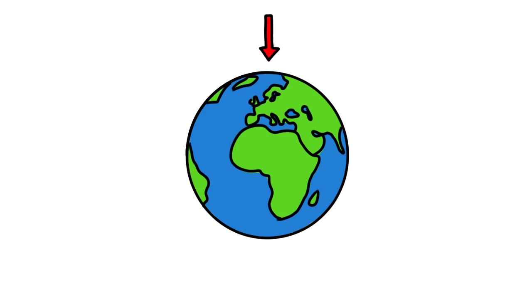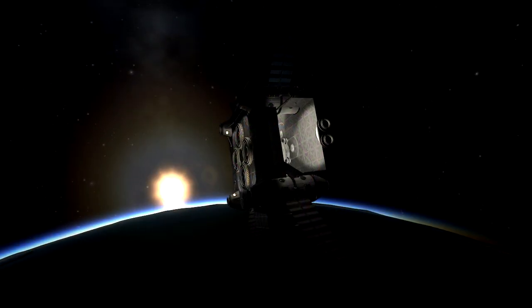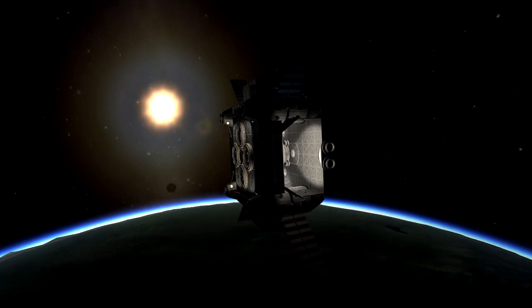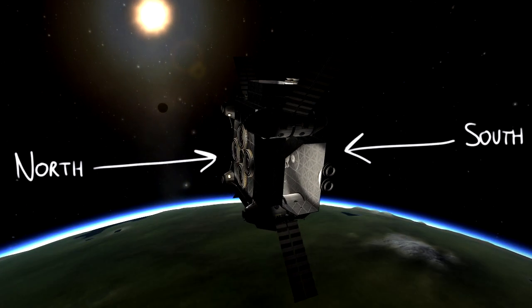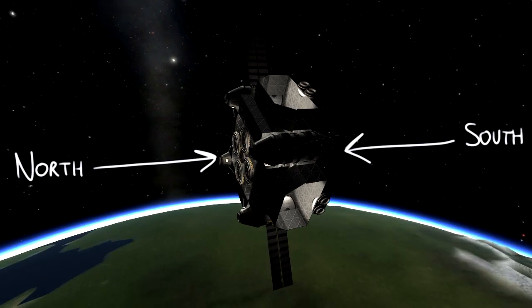We see this happen in Kerbal Space Program, and it makes docking more difficult by constantly moving the docking port. The way around this is to approach perpendicular to the direction of movement along the axis of rotation.